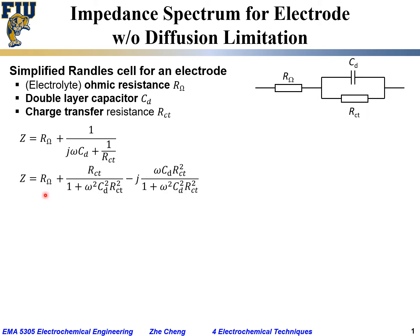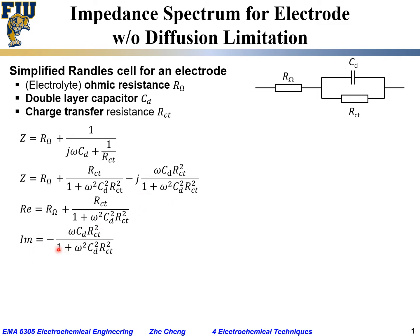Expanding the capacitance and resistance in parallel, the overall impedance for the three-element Randles cell has a real part equal to R_ohm plus R_ct divided by (1 + ω²·C²·R²), and an imaginary part equal to negative ω·C·R² divided by (1 + ω²·C²·R²).